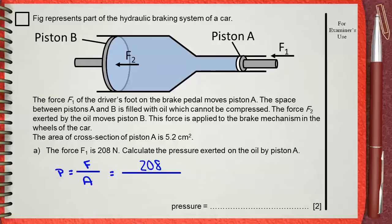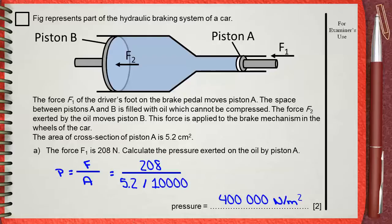5.2 will be divided by 10,000, which is 100 times 100, to convert 5.2 from cm² to m². In this case, the answer will be 400,000 N per m². N per m² is Pascal, but N per cm² is not Pascal. Pascal is the standard unit of pressure.